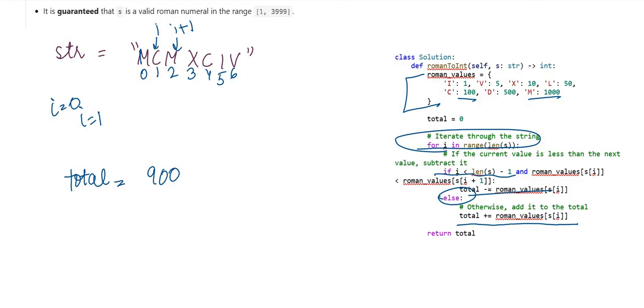Let's go to M, that means I value 2. So now M is I and X is I plus 1. So is the value of I less than I plus 1? No. Because X value is 10, M value is 1000. 1000 is greater than 10. So we will simply add 1000. It will become 1900.